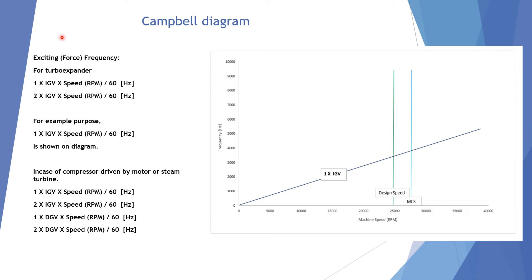Now, the exciting force frequency. For a turbo expander, it is typically taken as: 1 × IGB (number of inlet guide vanes) × speed in RPM ÷ 60. This gives the exciting frequency in Hertz. Similarly, 2 × IGB × speed in RPM ÷ 60. These are considered the exciting or force frequencies for a turbo expander. However, in this graph, only one case is shown — 1 × IGB — for understanding purposes.